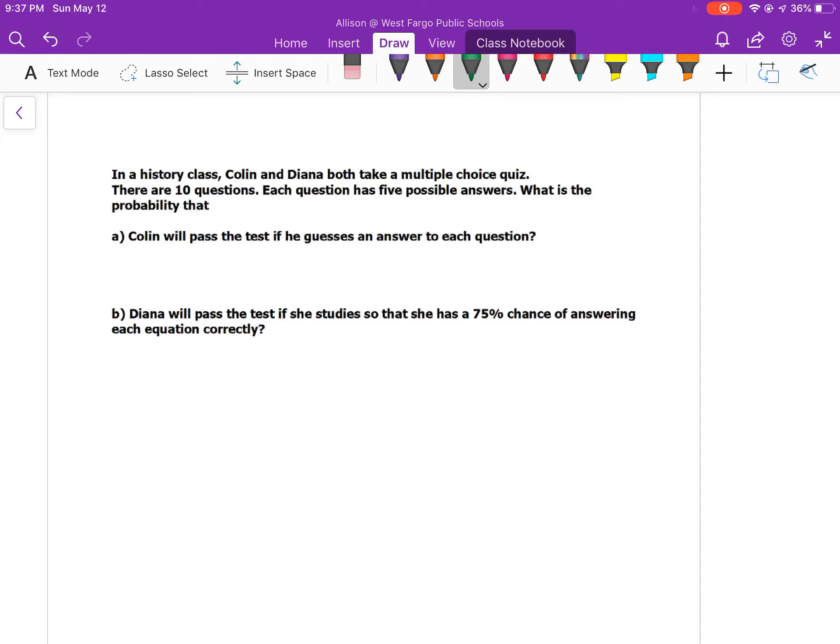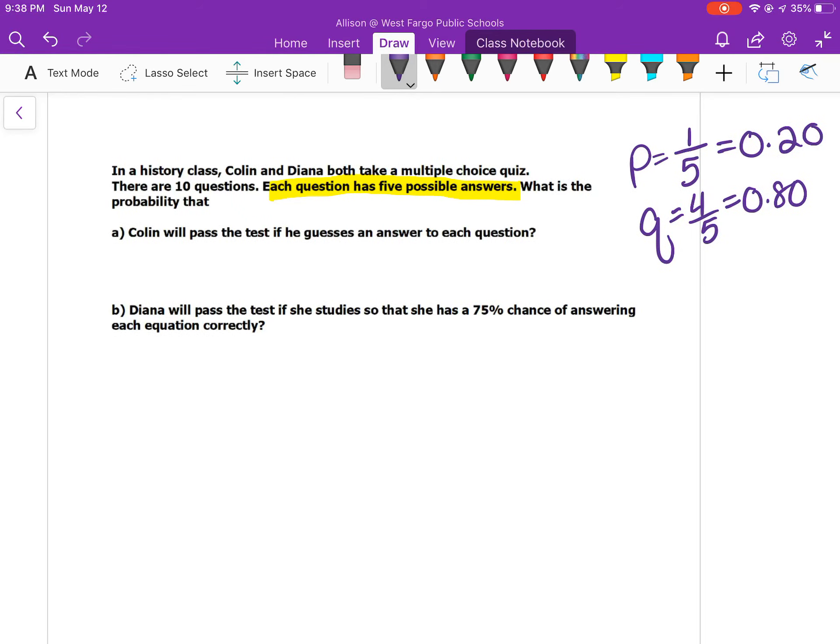In history class, Colin and Diana both take a multiple choice quiz. There are 10 questions. Each question has 5 possible answers. What is the probability that Colin will pass the test if he guesses? Colin has a standard chance to guess a question. Each question has 5 possible answers. So the probability that he gets it right is 1 out of 5, or 0.2, 20% chance. The chance he gets it wrong is 4 out of 5, or 0.80. So P is 0.2 and Q is 0.8.